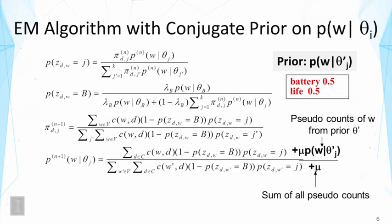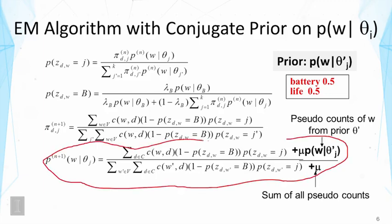When we re-estimate word distributions, we are going to add additional counts to reflect our prior. Here you can see the pseudo counts are defined based on the probability of words in our prior. Battery will have a high pseudo count. Similarly, life would have also high pseudo counts. All the other words will have zero pseudo counts because their probability is zero in the prior. This is also controlled by a parameter mu. We're going to add mu multiplied by the probability of w given our prior distribution to the collected counts when we re-estimate this word distribution.